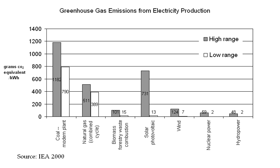Mitigation policies can substantially reduce the risks associated with human-induced global warming, according to the IPCC's 2014 assessment report. Mitigation is a public good. Climate change is a case of the tragedy of the commons. Effective climate change mitigation will not be achieved if each agent — individual, institution or country — acts independently in its own selfish interest, suggesting the need for collective action.